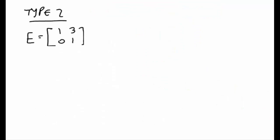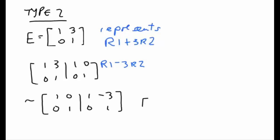Next we'll take a look at type 2 elementary matrices. This particular elementary matrix represents row 1 plus 3 row 2s. So just like before we will attach an identity matrix on the right hand side and we're going to try to get the left hand side to reduced row echelon form. So let's do the operation row 1 minus 3 row 2s.